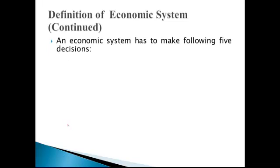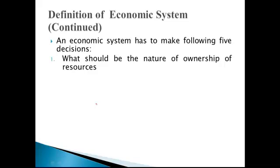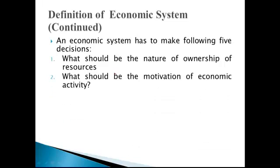अब हम उन पाँच decisions को देखेंगे, जिनकी basis पर हम एक economic system को दूसरे economic system से distinguish करते हैं. First is, what should be the nature of ownership of resources? किसी भी economy में means of production या resources की ownership किसके पास होनी चाहिए? क्या इन resources की ownership government के पास होनी चाहिए, जैसा कि socialism में होता है, या ये resources economy के individuals के पास हों जैसा कि capitalism में होता है, या कुछ resources government own करे और कुछ individuals के पास हों — इसको हम mixed economic system कहते हैं.